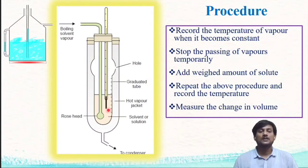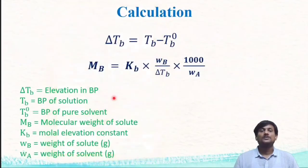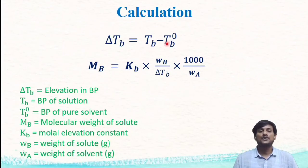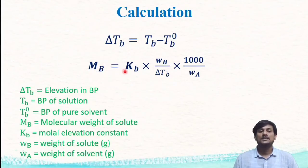After recording the boiling point of the solution, remove the rose head tube and the thermometer, then measure the change in volume. The elevation of boiling point, delta Tb, is the difference between the boiling point of the solution and the boiling point of the solvent. We have measured both values, so their difference gives the elevation of boiling point. Using this, we can measure the molecular weight of the solute, Mb, since there is a relation between Mb and delta Tb.